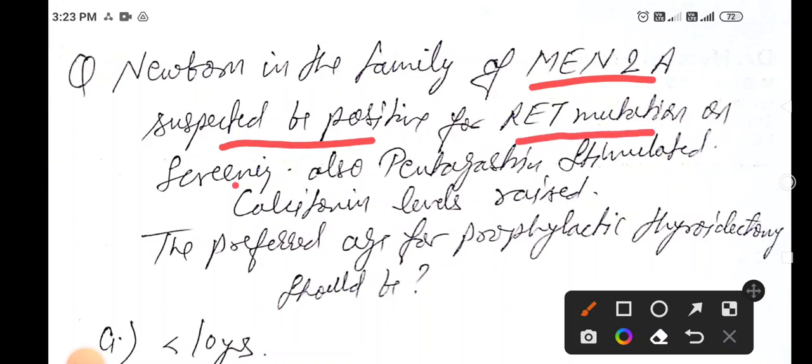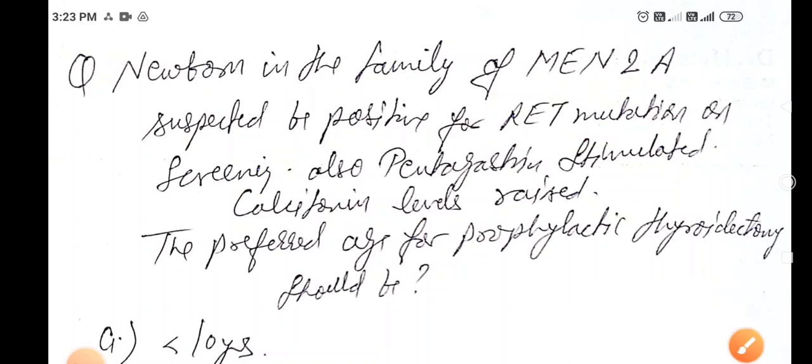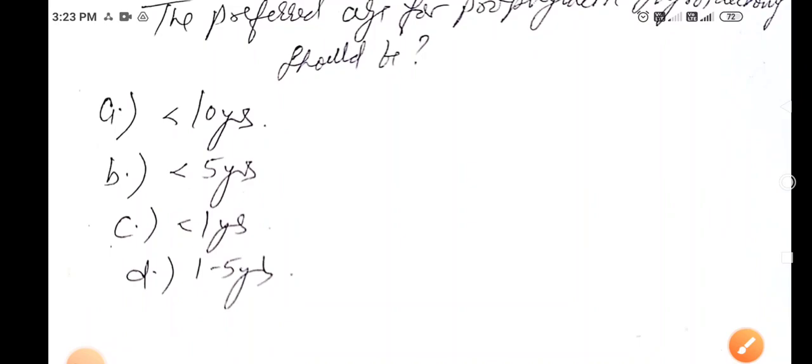RET mutation on screening is positive. Also, pentagastrin stimulated calcitonin levels are raised. The preferred age for prophylactic thyroidectomy should be: a) less than 10 years, b) less than 5 years, c) less than 1 year, or d) 1 to 5 years.